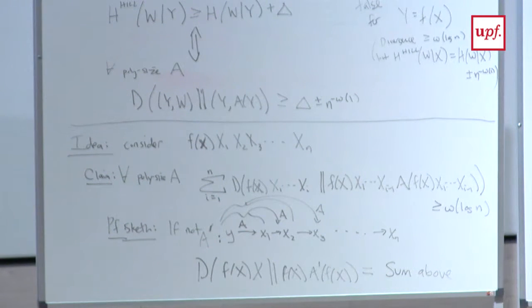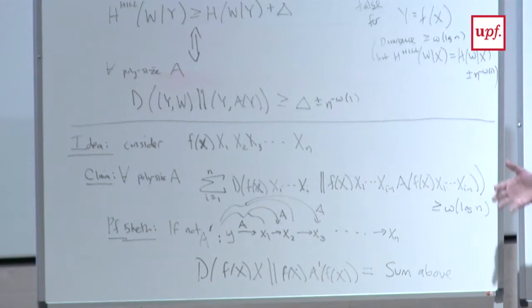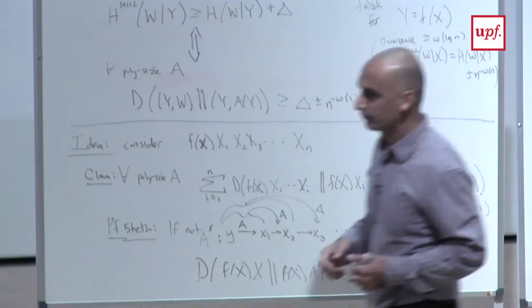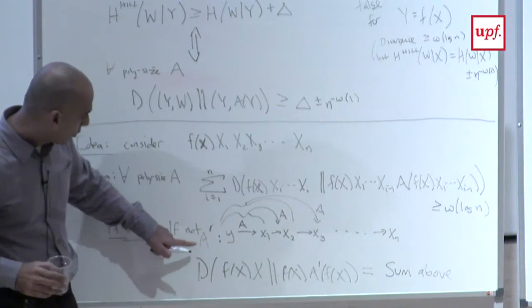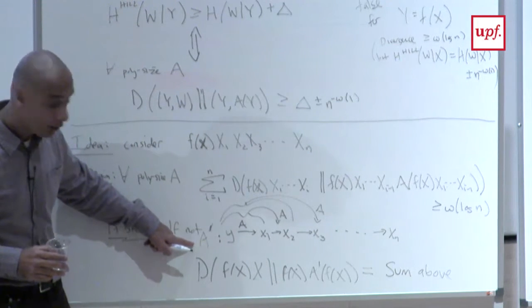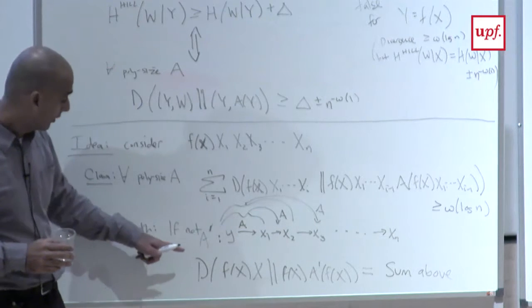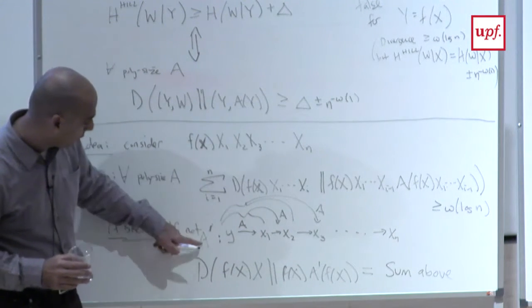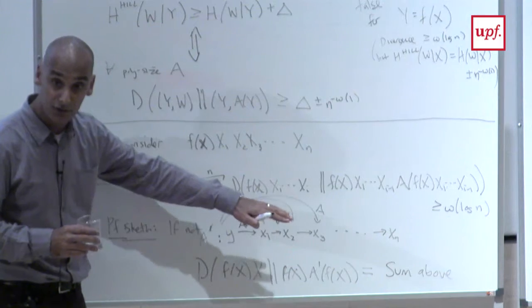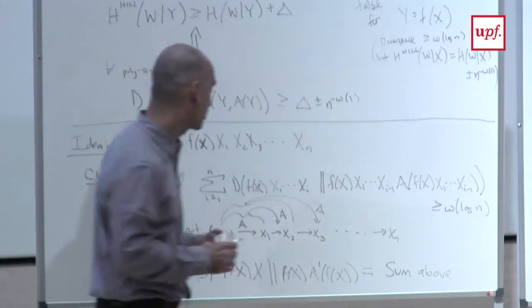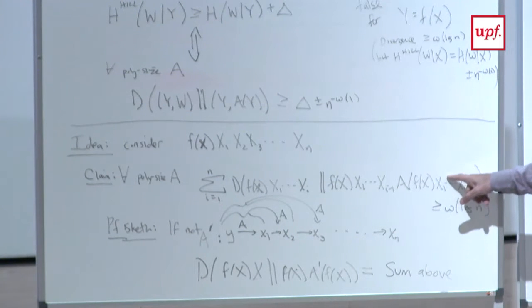One can show that the divergence achieved by this A' — constructed from A in this way — to the right distribution of pre-images is exactly the sum of the divergences achieved by A predicting individual bits. That's by a chain rule for divergence, similar to how Shannon entropy has exact chain rules. So the divergence between (f(x), x) and (f(x), A'(f(x))) is exactly equal to the sum in the claim.